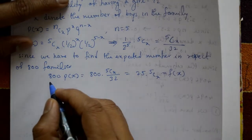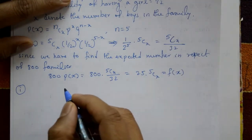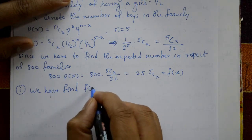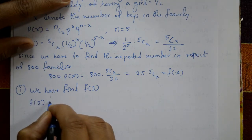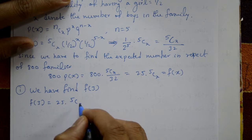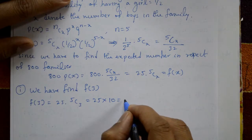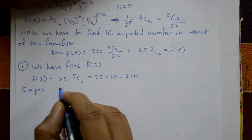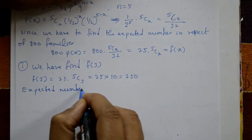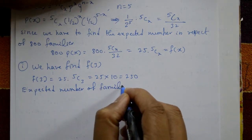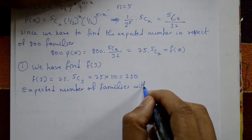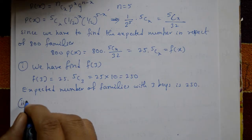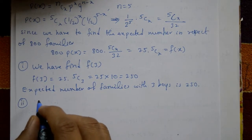Case 1: three boys. One family has three boys, so we find f(3). f(3) = 25 × 5C3 = 25 × 10 = 250. The expected number of families with three boys is 250.